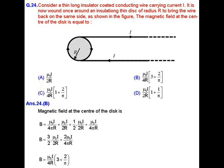IIT JAM Physics JTP 2017 question number 24. In this question, a thin long insulated coated conducting wire carrying current I is given. It is now wound once around an insulating thin disk of radius R to bring the wire back on the same side, as shown in the figure. The magnetic field at the center of the disk is what we have been asked to calculate.